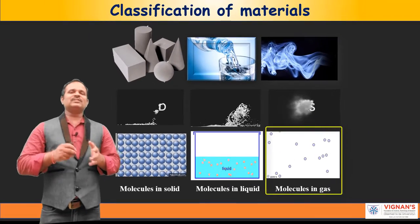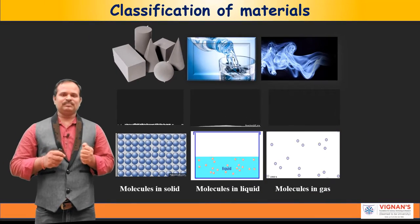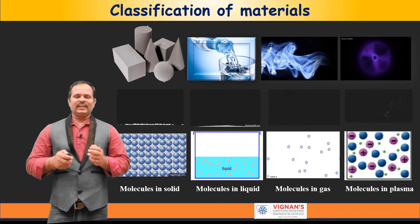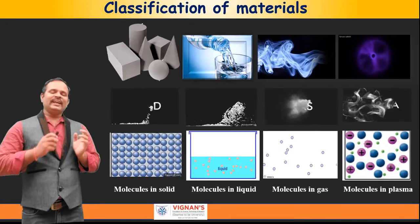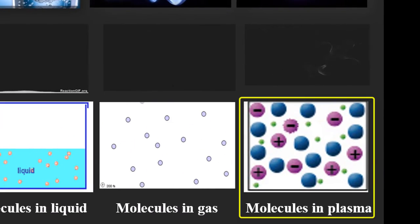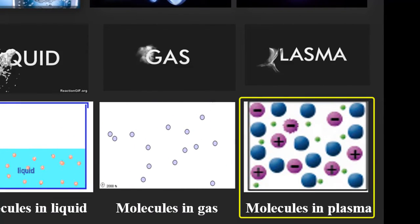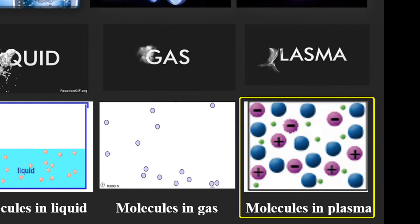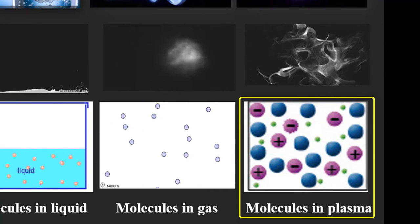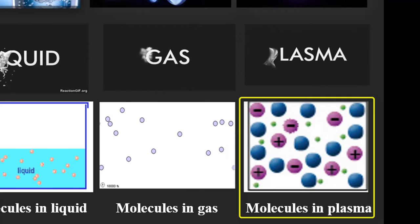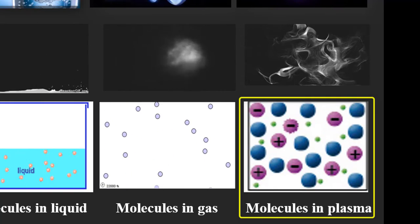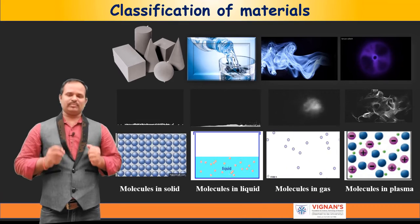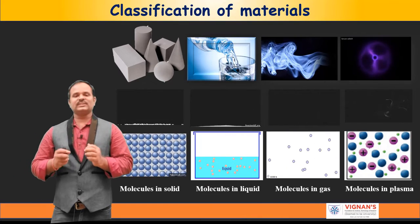There is another class of material called plasma. Plasma is a fourth state of matter. As you can see, there exists a mixed state of materials. In the plasma, there exist atoms, molecules, excited atoms, electrons, photons, etc. So the classification of materials is of four types.